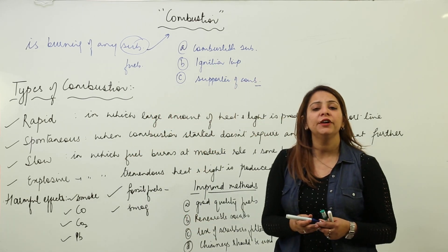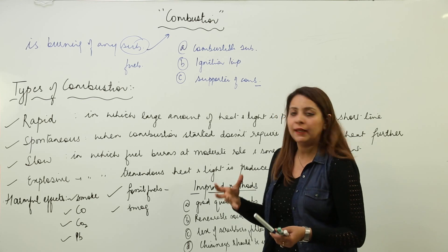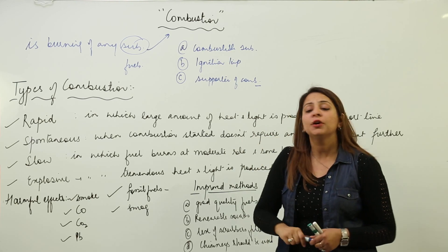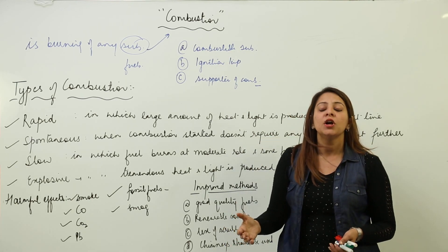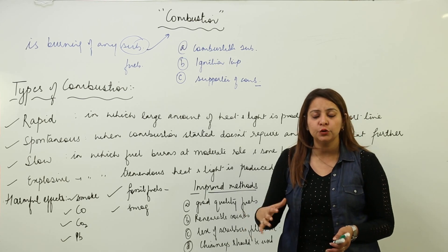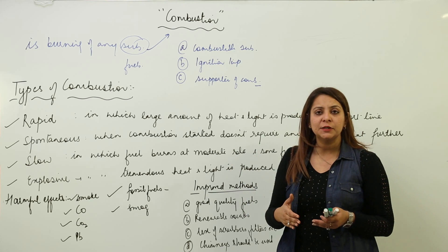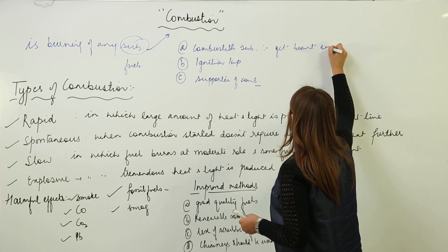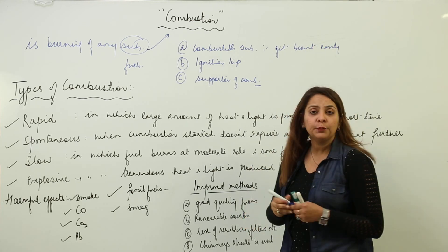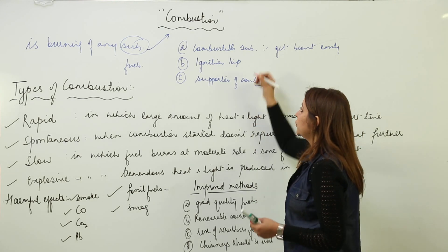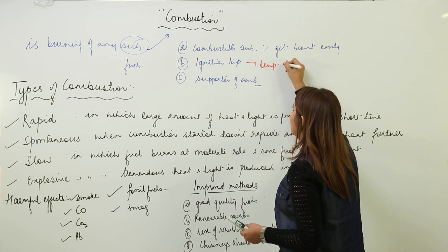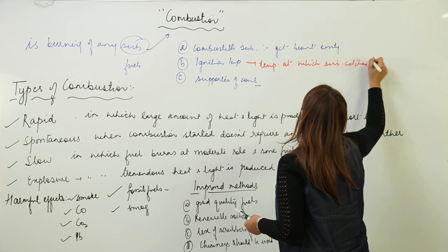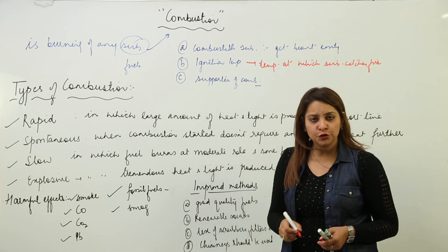Whenever you need to carry out combustion, you need three things. First, the substance should be combustible — it should catch fire easily. Incombustible substances are those which do not burn. The substance should get burnt easily. Moreover, it should have a proper ignition temperature, which is the temperature at which a substance catches fire.